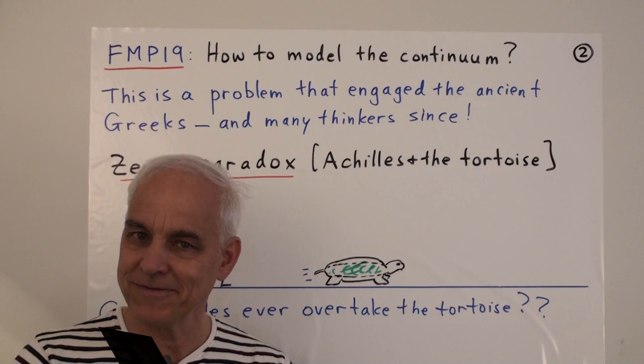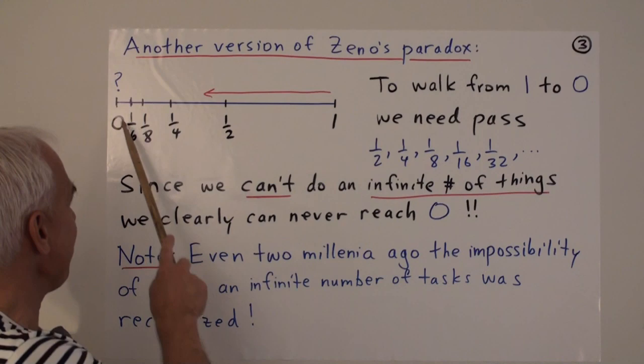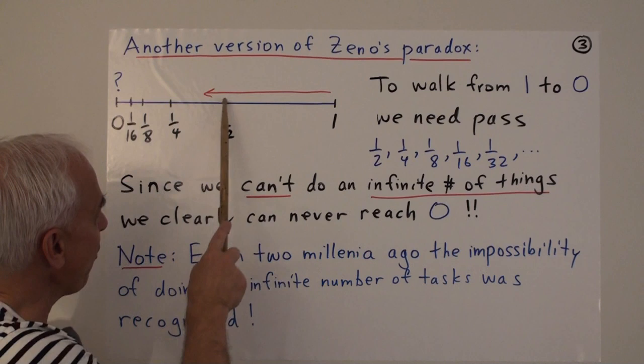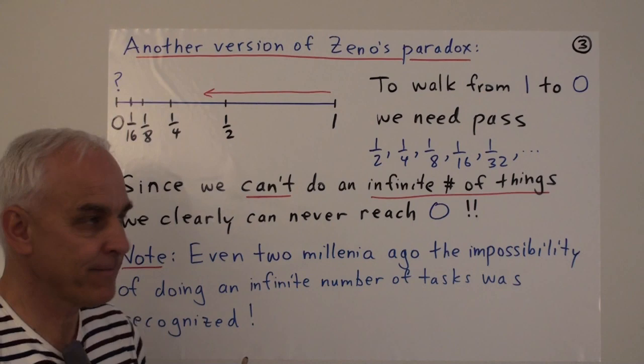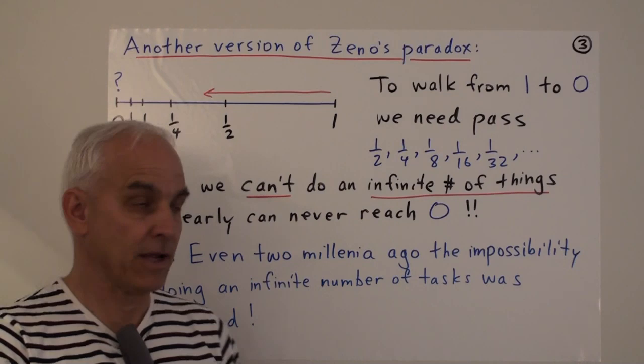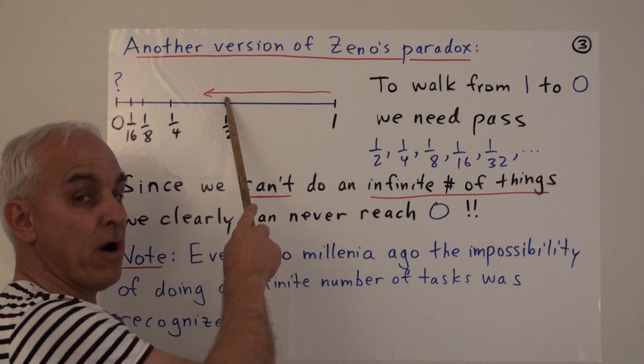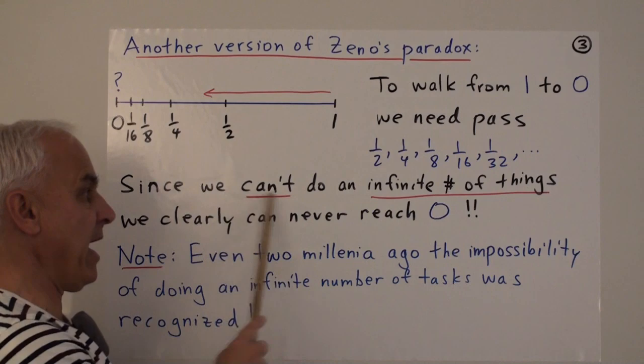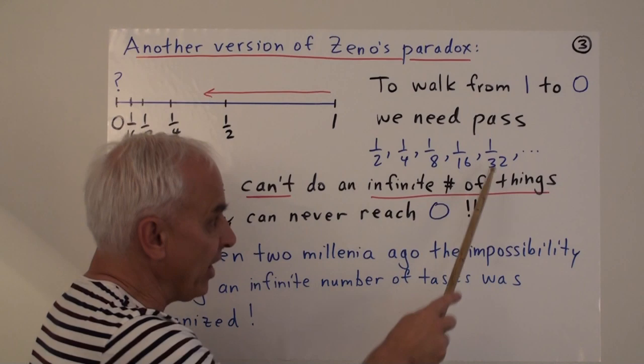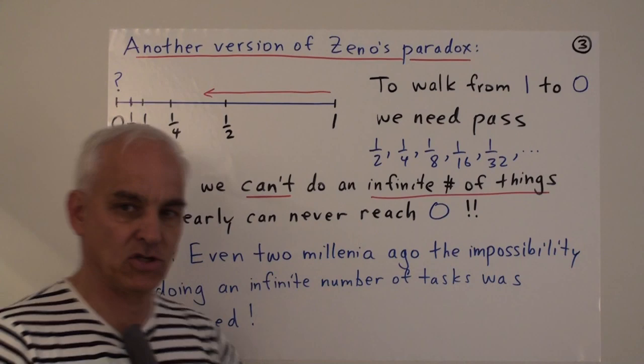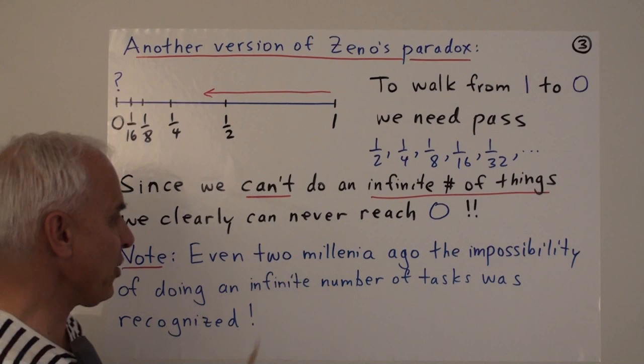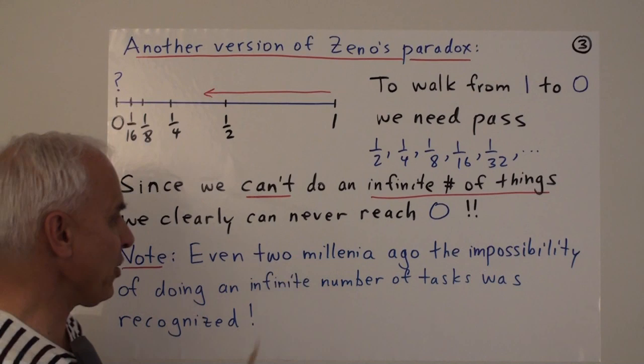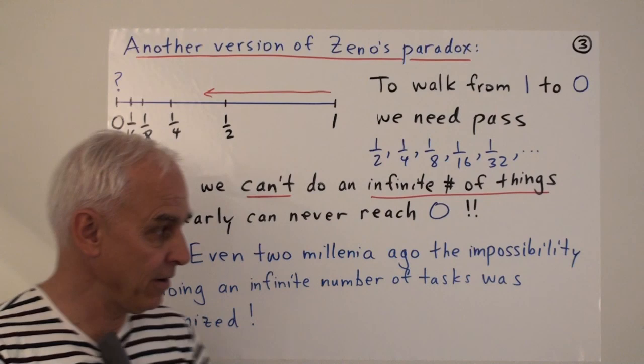Here's another variant of Zeno's argument. Suppose that we have an interval, and it's labeled 0 to 1. And here's the point 1 half, and here's the point 1 quarter, and here's 1 eighth, and here's 1 sixteenth, and so on. So suppose we want to walk from 1 to 0. We certainly need to pass the point marked 1 half, and we need to pass the point marked 1 quarter, and the point marked 1 eighth, and the point marked 1 sixteenth, and so on. But we can't do an infinite number of things, because each one of these things is something that we're doing. We can't do an infinite number of things, so clearly we can never reach 0.